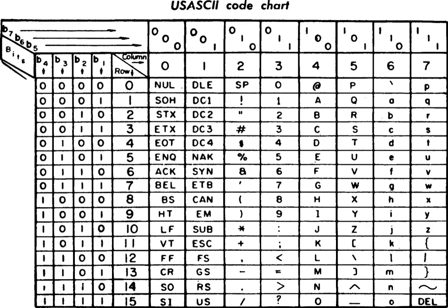As computer technology spread throughout the world, different standards bodies and corporations developed many variations of ASCII to facilitate the expression of non-English languages that used Roman-based alphabets. One could class some of these variations as ASCII extensions, although some misuse that term to represent all variants, including those that do not preserve ASCII's character map in the 7-bit range. Furthermore, the ASCII extensions have also been mislabeled as ASCII. From early in its development, ASCII was intended to be just one of several national variants of an international character code standard. Other international standards bodies have ratified character encodings such as ISO 646 that are identical or nearly identical to ASCII, with extensions for characters outside the English alphabet and symbols used outside the United States, such as the symbol for the United Kingdom's pound sterling. Almost every country needed an adapted version of ASCII, since ASCII suited the needs of only the U.S. and a few other countries.